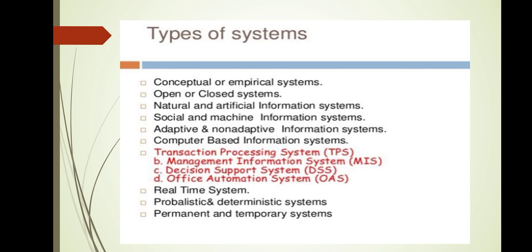What are the types or classification of systems? First, conceptual or empirical system. Second, open or closed system. Third, natural and artificial information system. Fourth, social and machine information system. Fifth, adaptive or non-adaptive information system. Sixth, computer-based information system (CBIS), which includes transaction processing system (TPS), management information system (MIS), decision support system, and office automation system. Also: real-time system, probabilistic and deterministic system, permanent and temporary system.